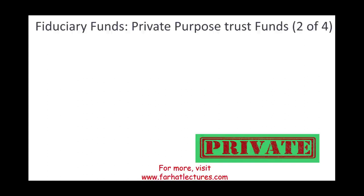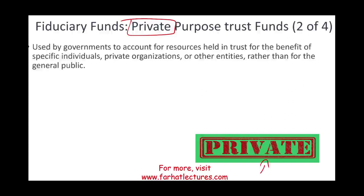Another fiduciary fund is the private purpose trust fund. The key word here is 'private.' This is used by the government to account for resources held in a trust for the benefit of specific individuals, private organizations, or other entities — rather than the general public. For example, a wealthy individual can give money to help a specific group of people, either by setting up their own trust or by giving the money to the government and saying 'maintain this for me.' That's the private purpose trust fund.